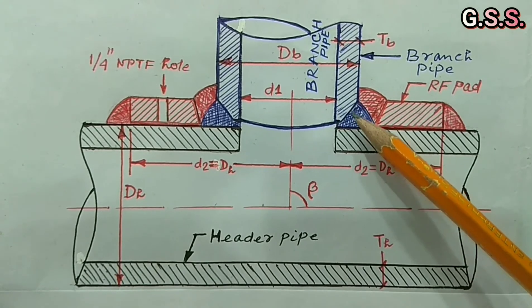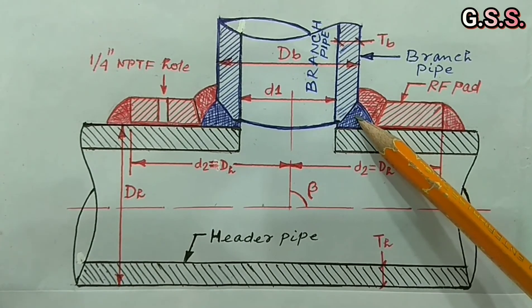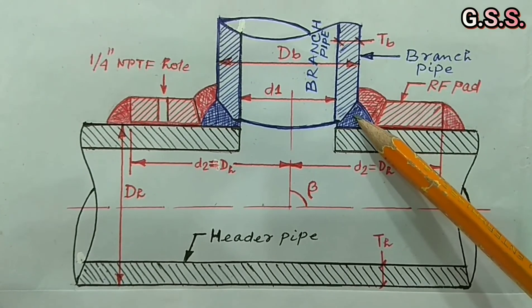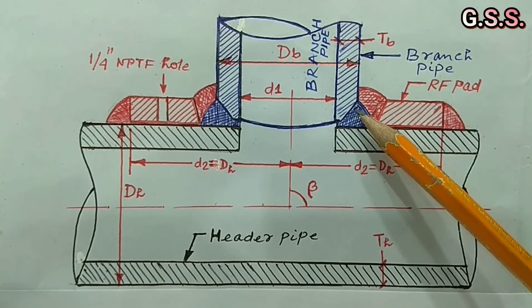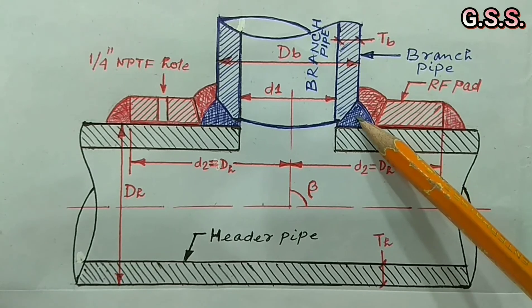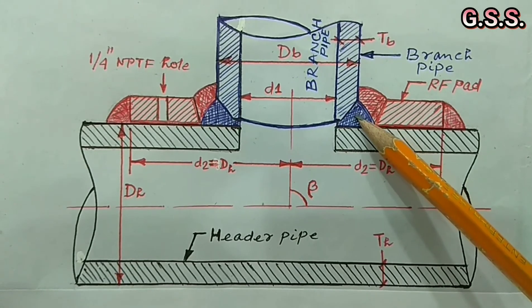Because SIF means stress intensification factor of butt welding is 1 whereas SIF for fillet welding is 1.3. That means 30% more stress is developed in direct branching.